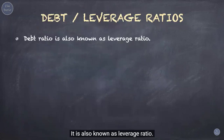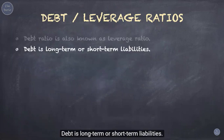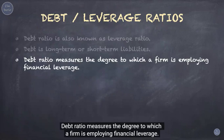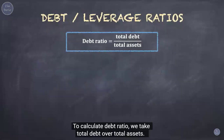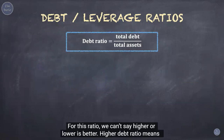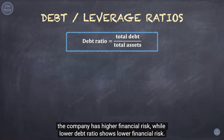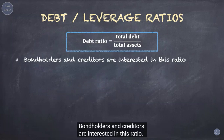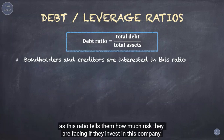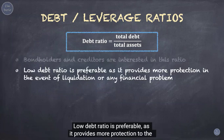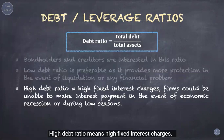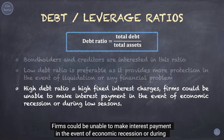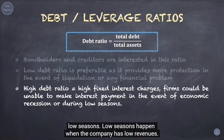The next category is the debt ratio, also known as the leverage ratio. Debt refers to long-term or short-term liabilities. The debt ratio measures the degree to which a firm is employing financial leverage and is calculated by taking total debt over total assets. For this ratio, we can't say higher or lower is simply better. Higher debt ratio means higher financial risk, while lower debt ratio means lower risk. Bondholders and creditors are interested in this ratio. Low debt ratio is preferable as it provides more protection in the event of liquidation. High debt ratio means high fixed interest charges, and firms could be unable to make interest payments during an economic recession or low revenue seasons.